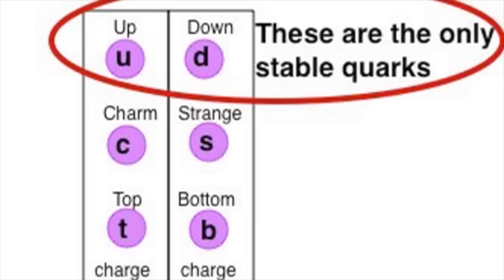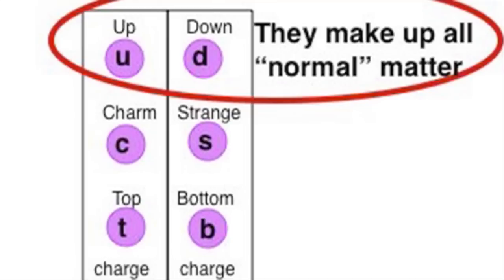Only two of the quarks are stable and they make up all normal matter, that is protons and neutrons.